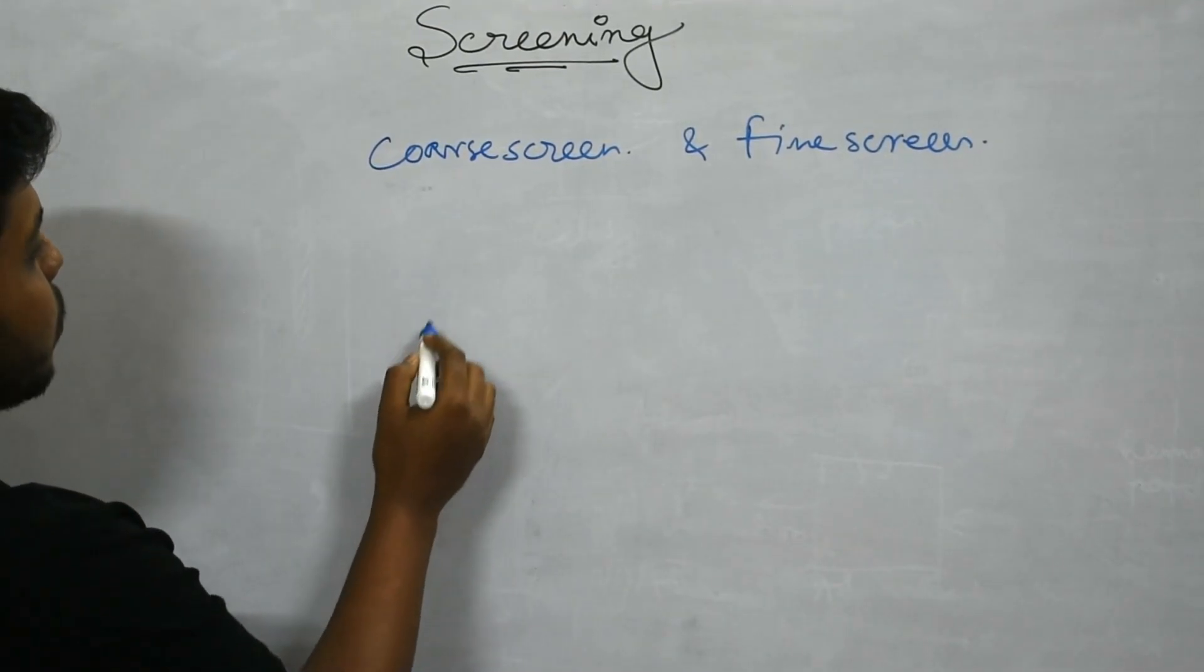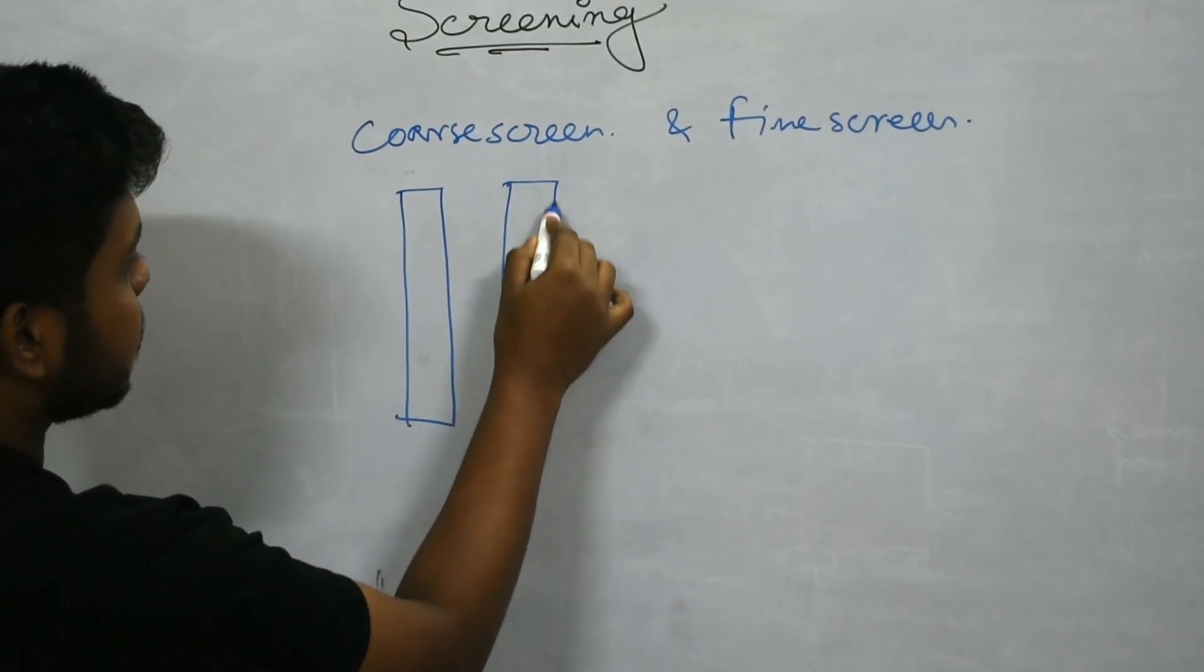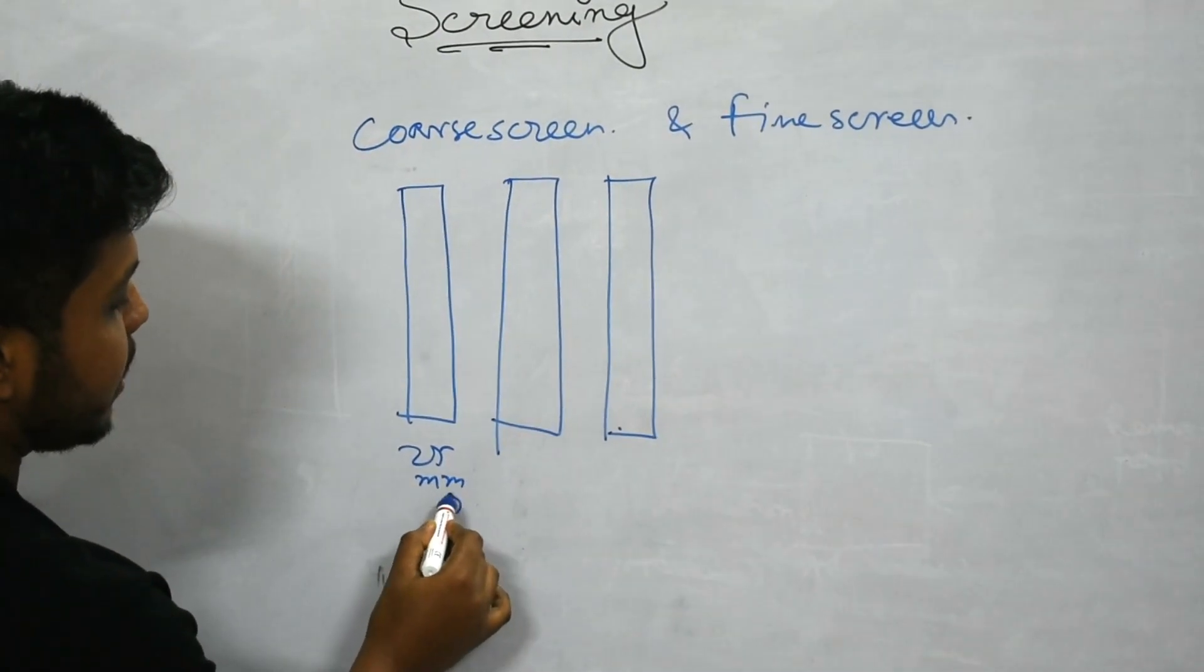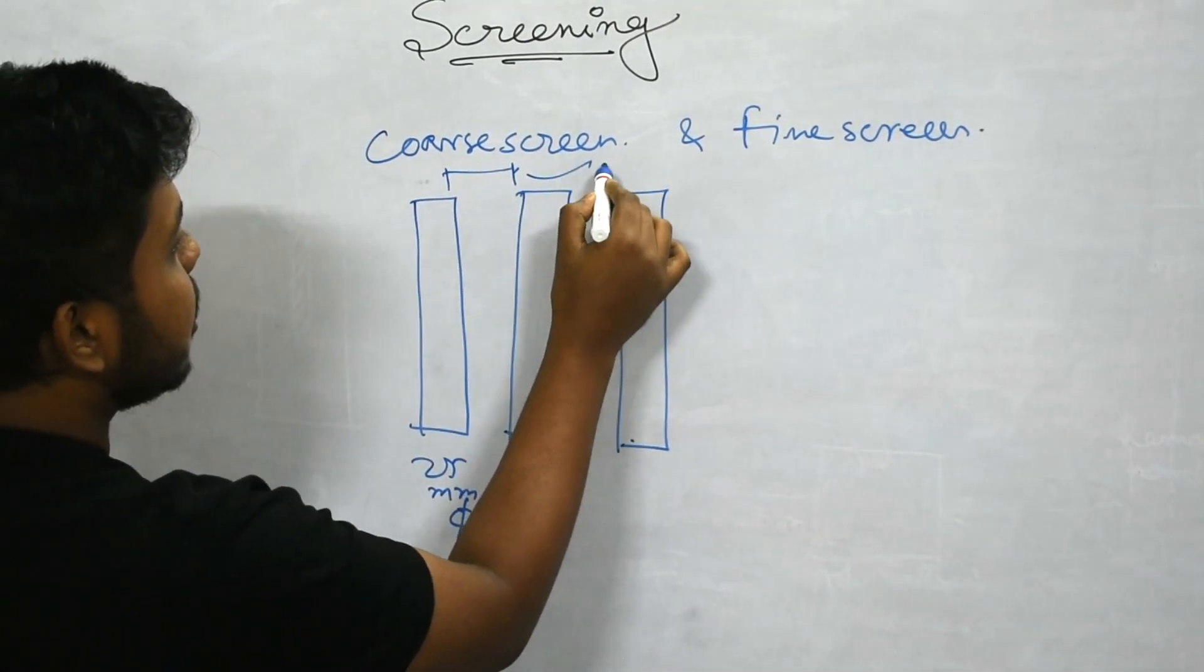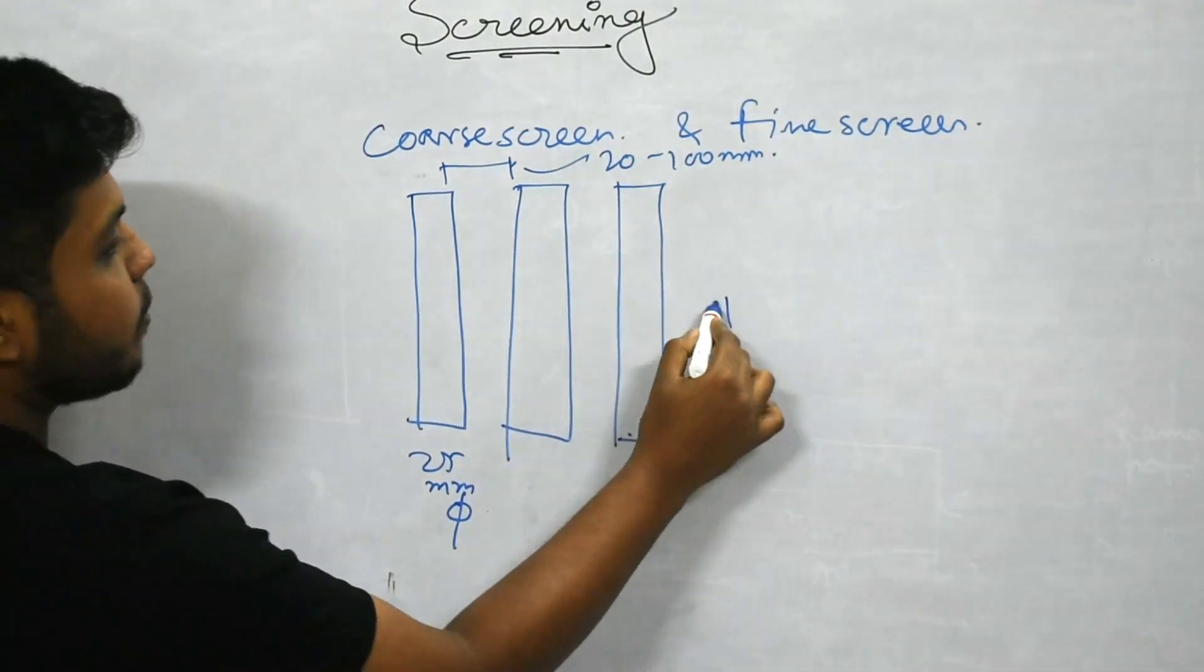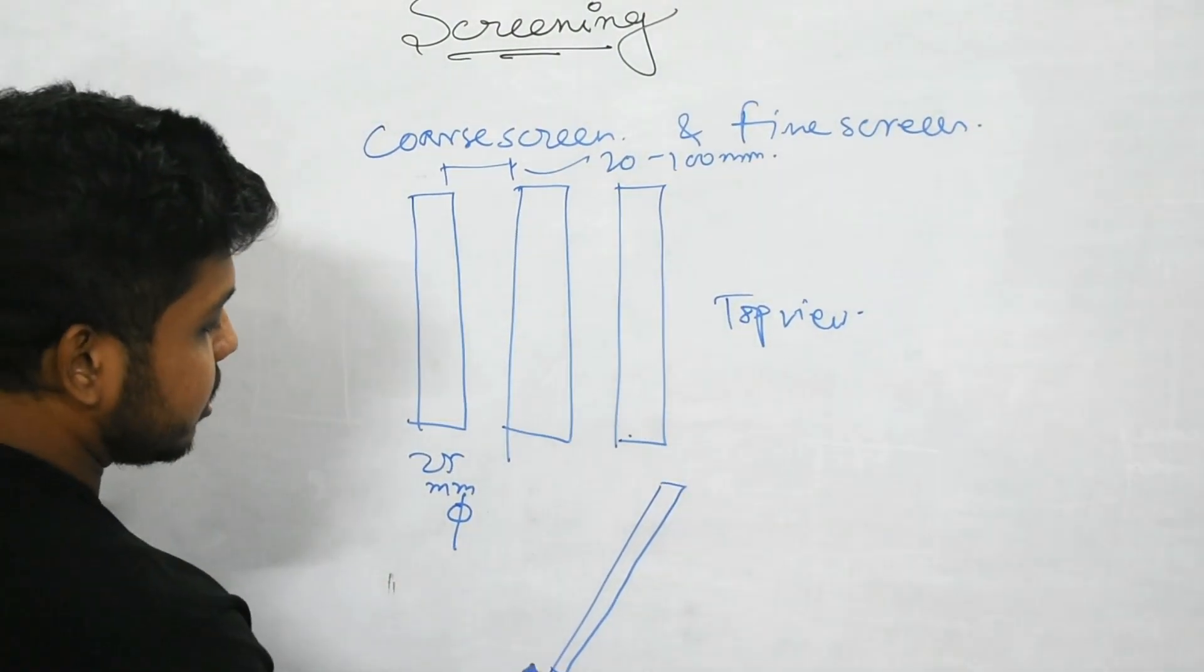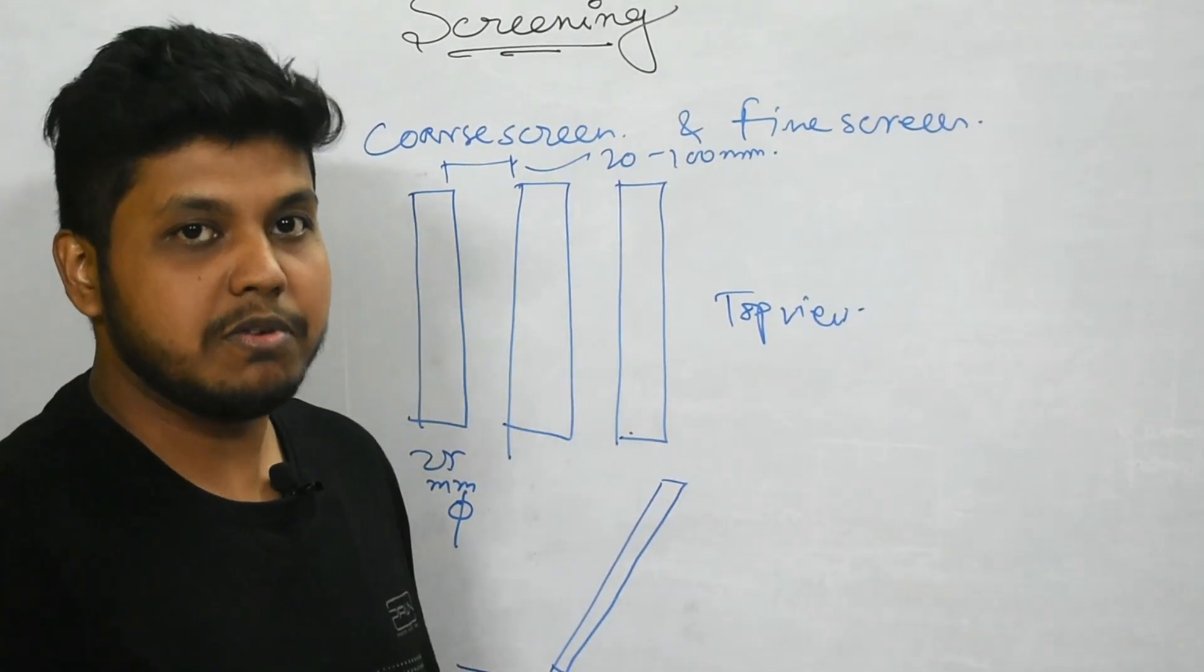What is coarse screen? Coarse screen is some bars provided in parallel. These bars are of 25 mm diameter and these openings are of 20 to 100 mm. This is the top view. These are provided in some inclination because this inclination provides better removal efficiency.